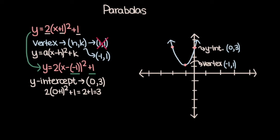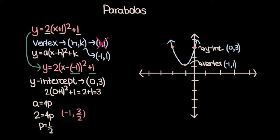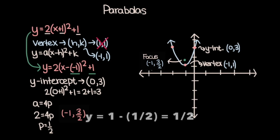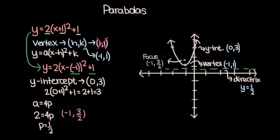Now let's find the coordinates for the focus and the equations for the directrix and axis of symmetry. The equation a equals 4p still applies here. We know a equals 2, so 2 equals 4p. Dividing by 4 on both sides, p equals 1 half, which means the focus is 1 half above the vertex. The vertex has coordinates negative 1 comma 1, so the focus must be at negative 1 comma 3 halves. The directrix must be 1 half below the vertex, which means it's the horizontal line y equals 1 half.